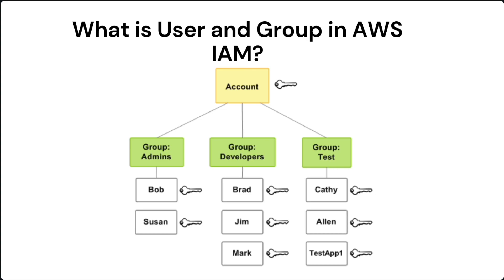To access the AWS Management Console, the user needs a username and password. If the user wants to access AWS services using the CLI, they need an access key and secret access key. A user group is a collection of users.